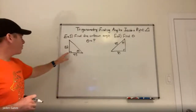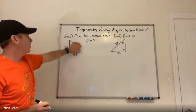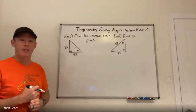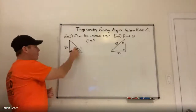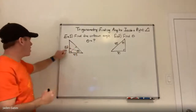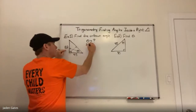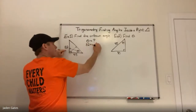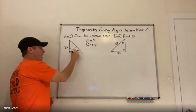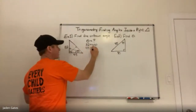The right angle always has the hypotenuse across from it — we don't have that labeled yet. Based on our angle theta, the side across from it is the opposite, so 82 is our opposite. That makes 45 our adjacent — it's the side beside the angle.